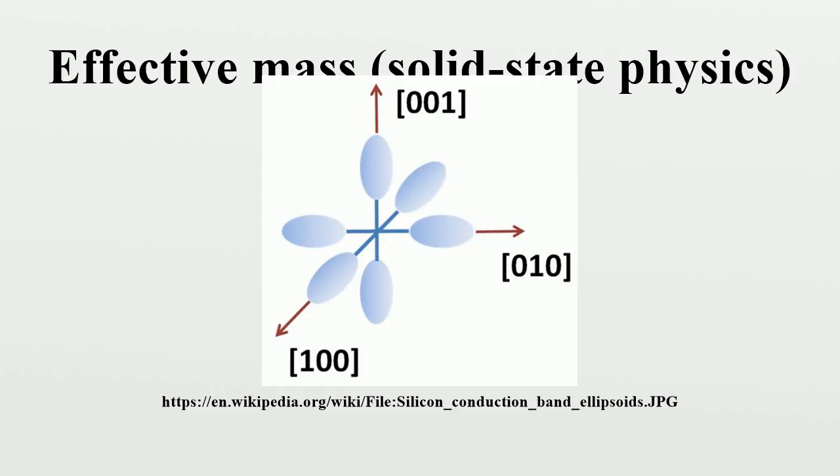For some purposes and some materials, the effective mass can be considered to be a simple constant of a material. In general, however, the value of effective mass depends on the purpose for which it is used, and can vary depending on a number of factors.